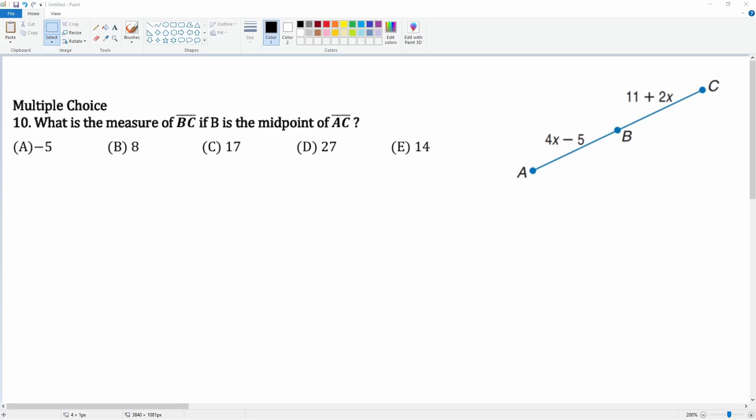All right, here we have question number 10. It says what is the measurement of BC. We know that B is the midpoint of AC. Since it is the midpoint, that means this part is congruent to that part.